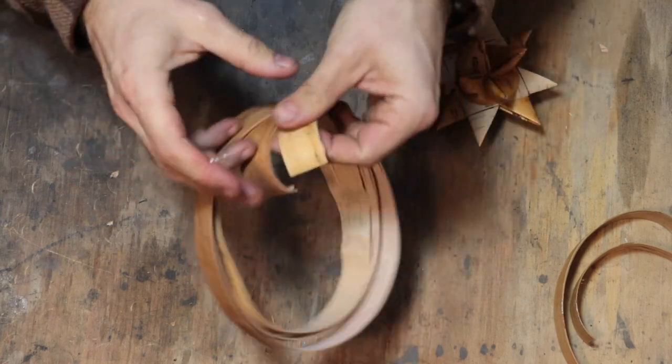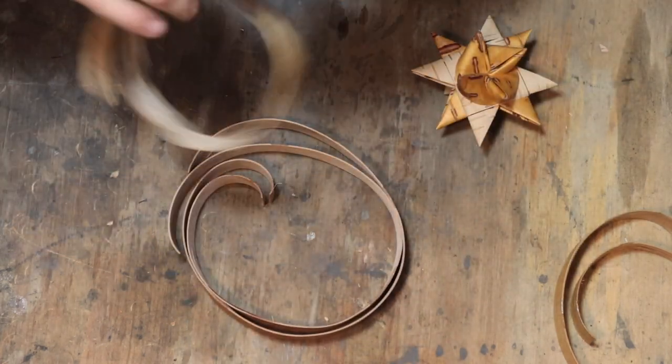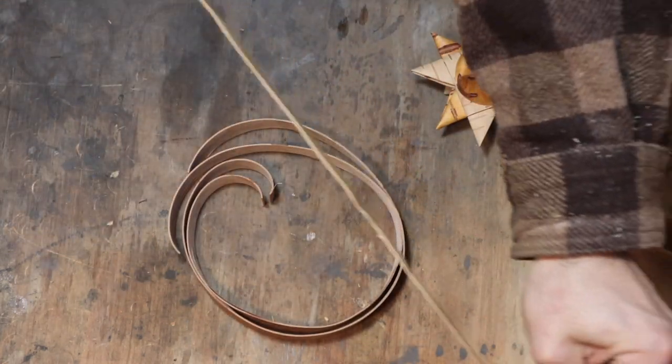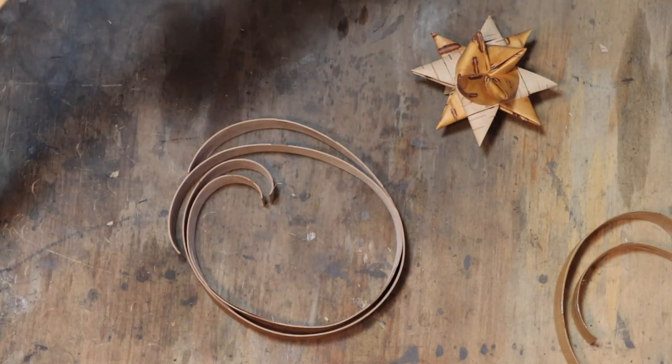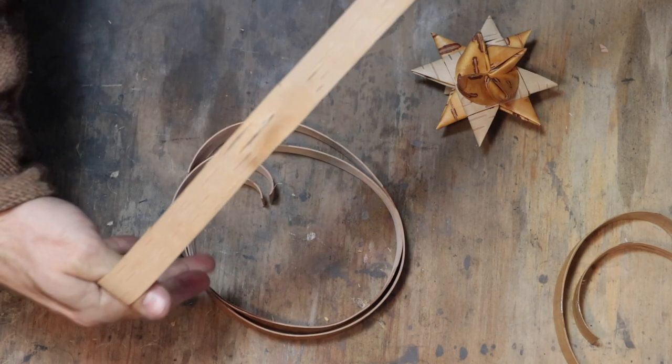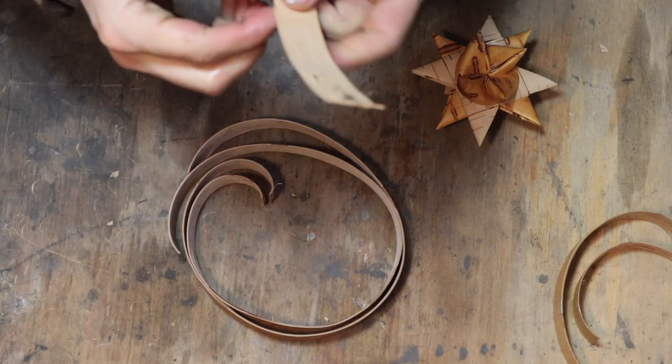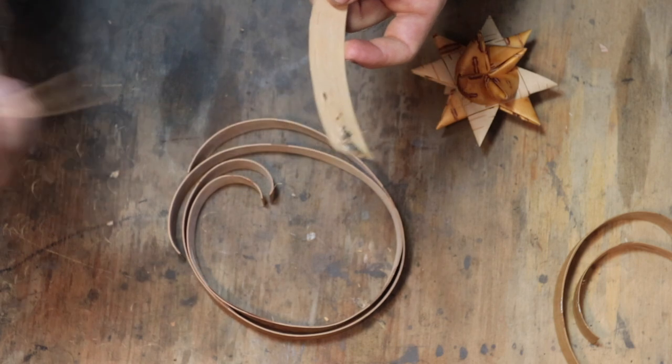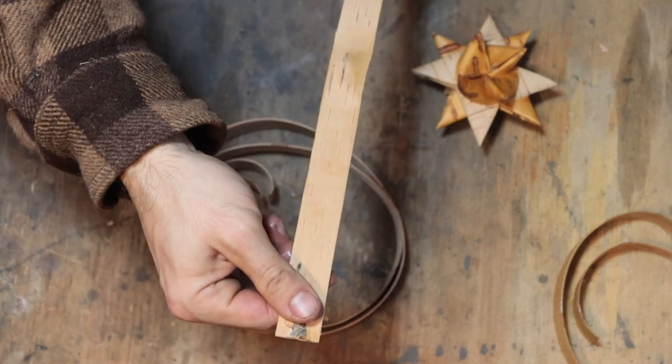This mainly helps when we're weaving it. It won't stick quite so much. It's also a useful point to inspect the bark and remove any bits that you think might get in the way.